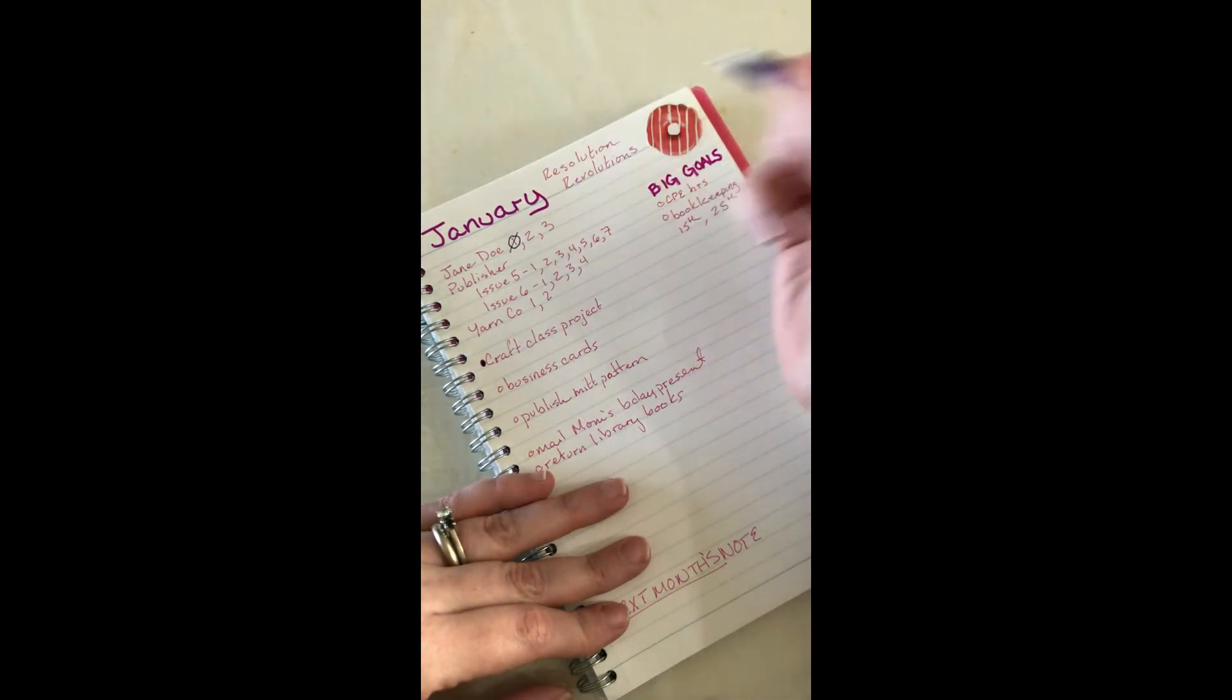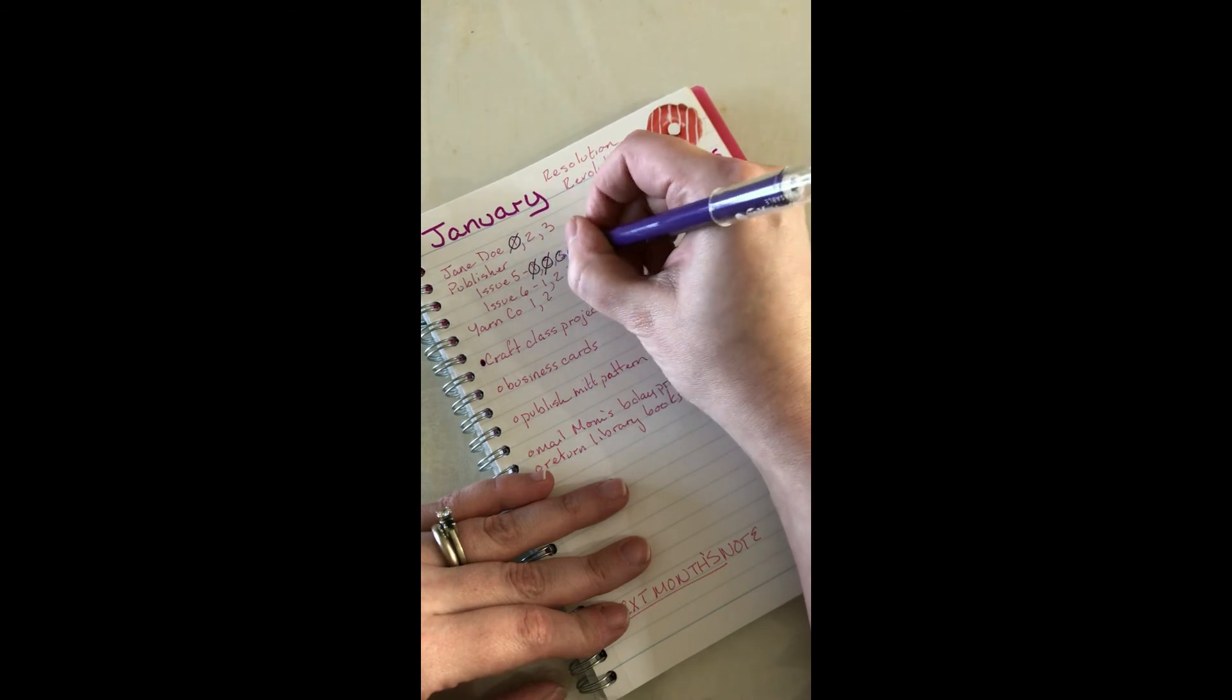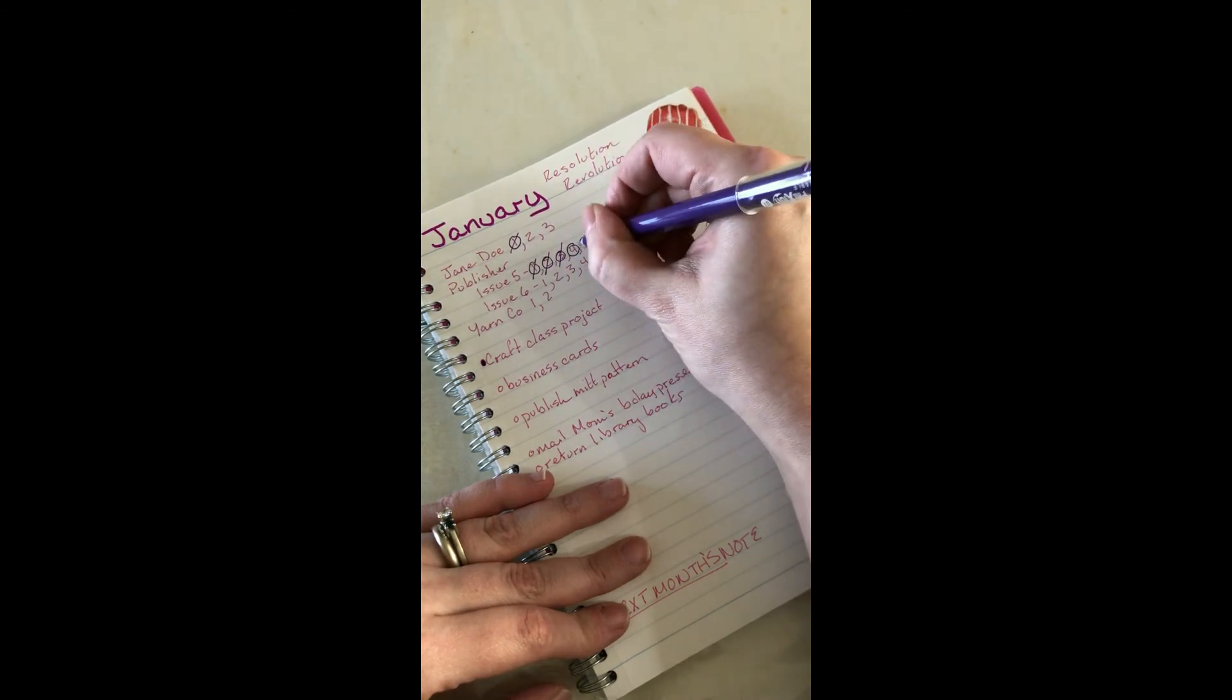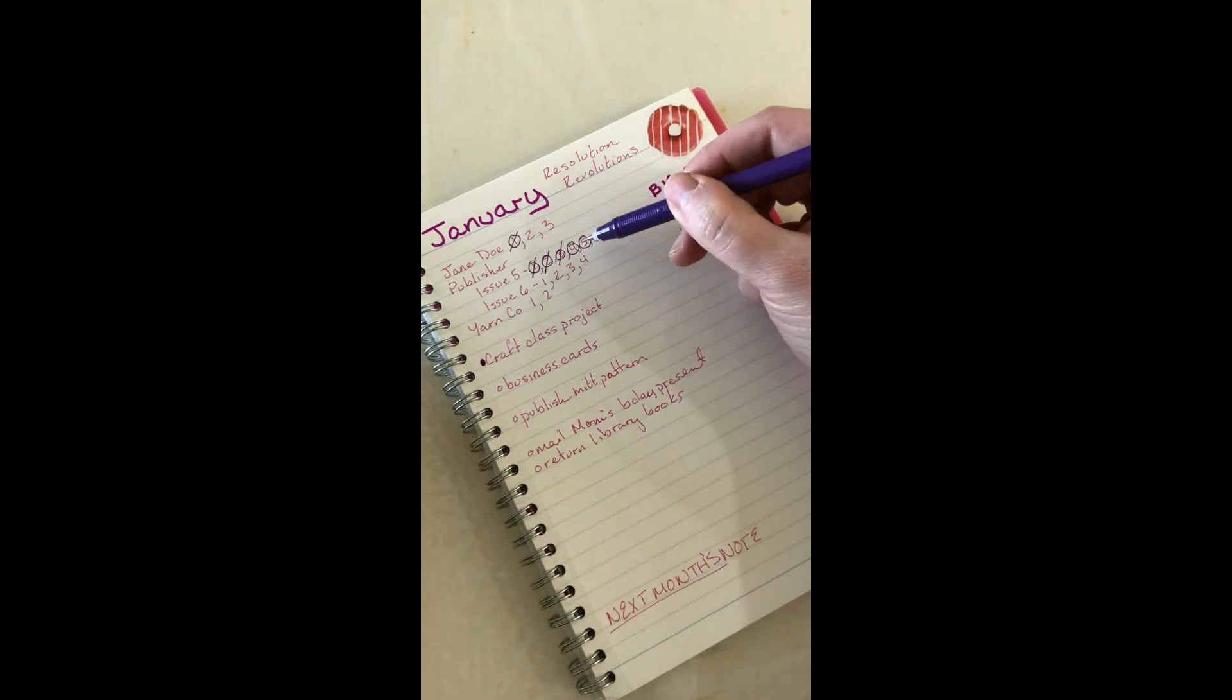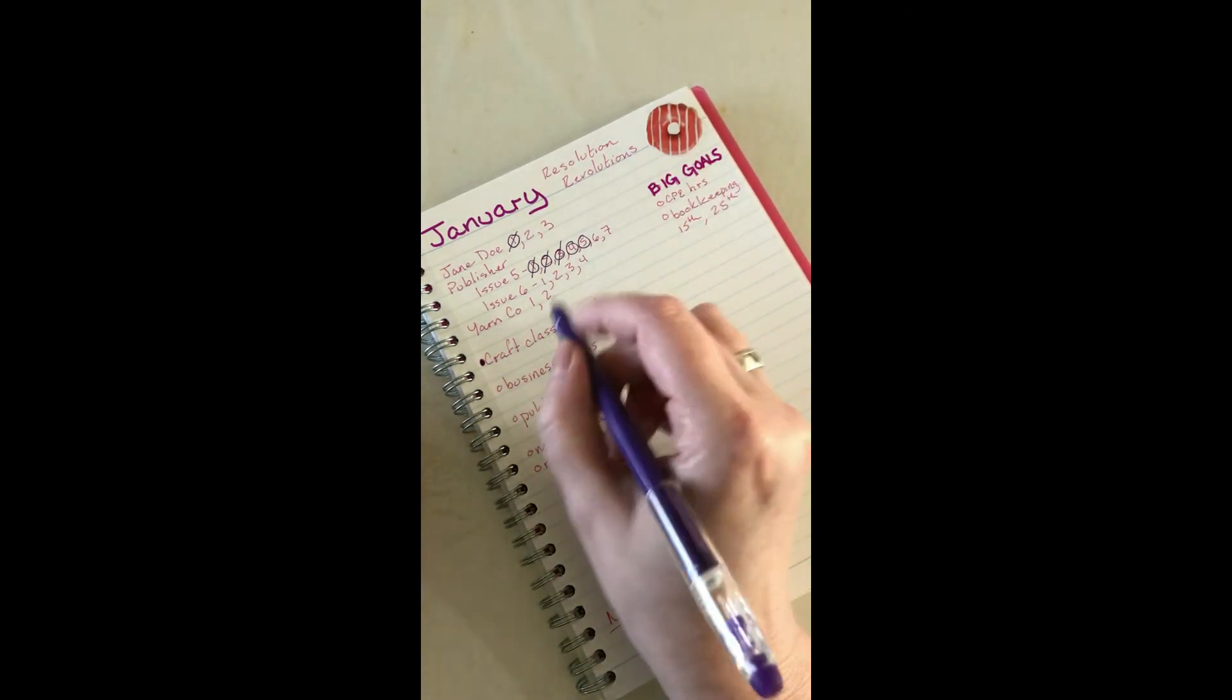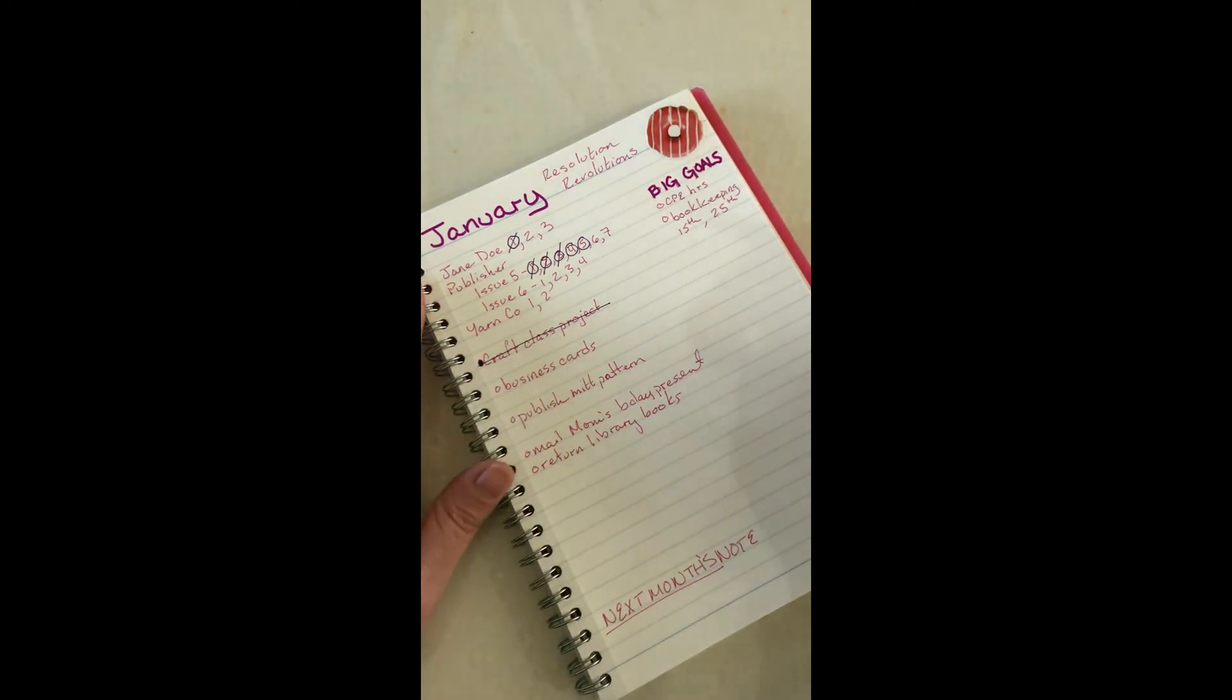Let's say for issue five I've worked on and finished three, but I've got two that are in progress because I'm waiting to hear back from people. Once I'm done with the craft class project then I'm just going to strike it out just like a regular to-do list. This is how I set up my monthly paper once a month at the beginning of the month. Next I'm going to show you how I set up my plan for the week.